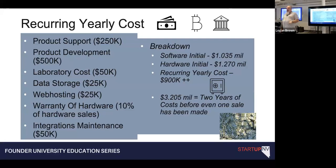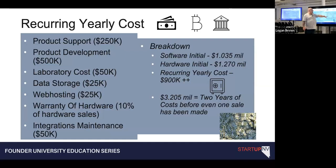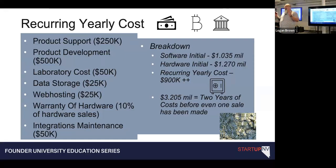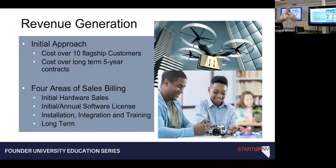Right now, initial software is about 1.03 million, hardware is 1.2 million, plus recurring yearly costs — we're already at 3.2 million in the first year just to get to year two, and we haven't sold a thing. So the next thing to think about is your pricing strategy. When it comes to software and IoT, you don't want to recover all your money from the first customer on the line.